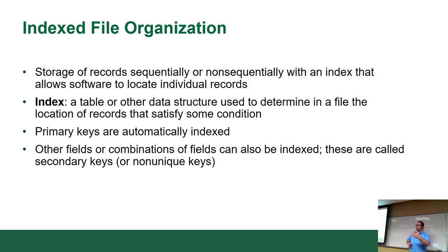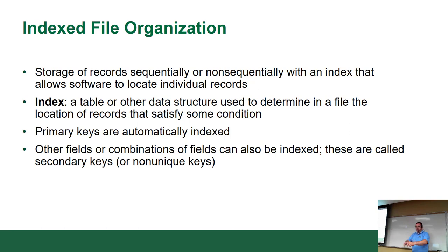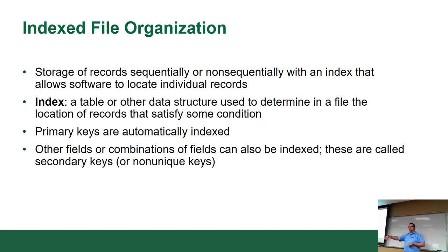Imagine if you had 10 million rows and wanted to pull up record 97,532 — you'd have to do a sequential scan, asking each record if it's the right one, 97,000 times. An index will basically jump through the list quickly to the right spot. Numbers are the easiest to index. I'll explain how that works in a minute.